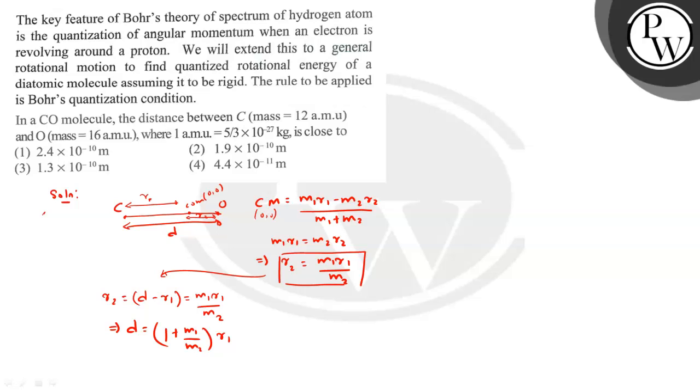Now, the moment of inertia I equals m1·r1² plus m2·r2² about the center of mass.